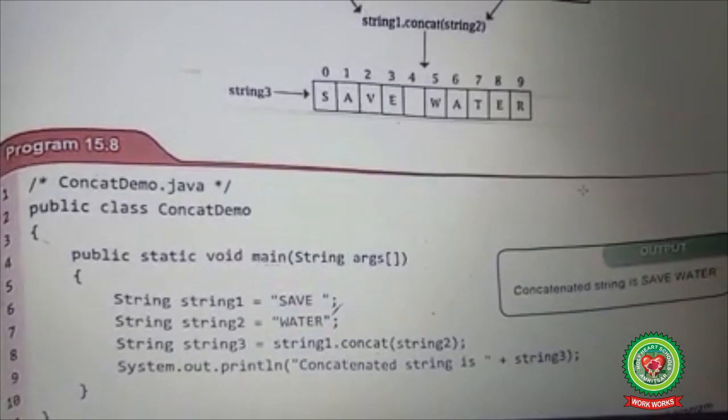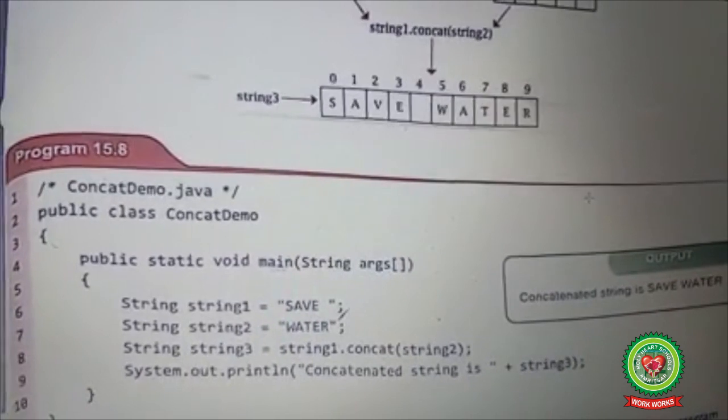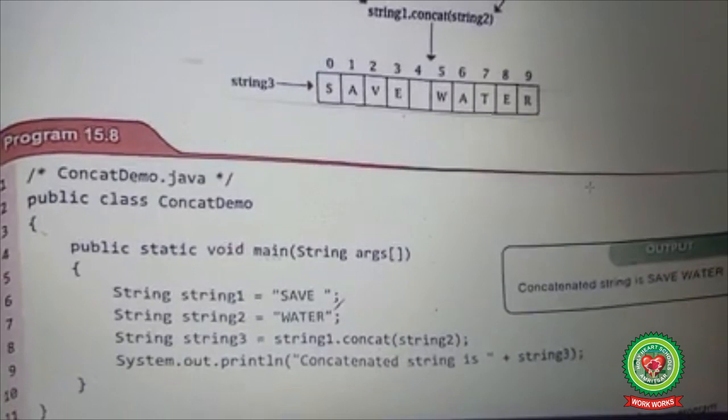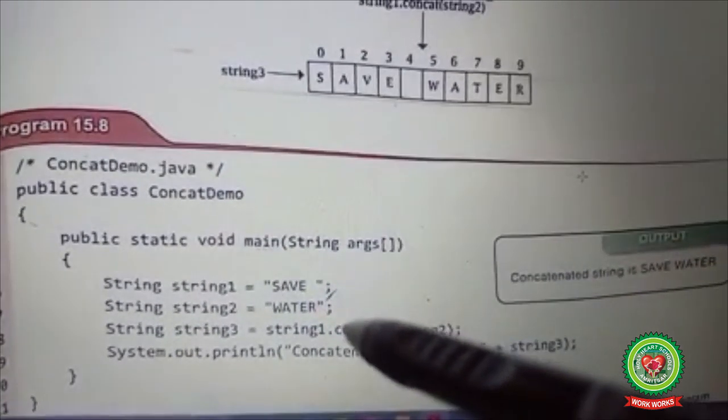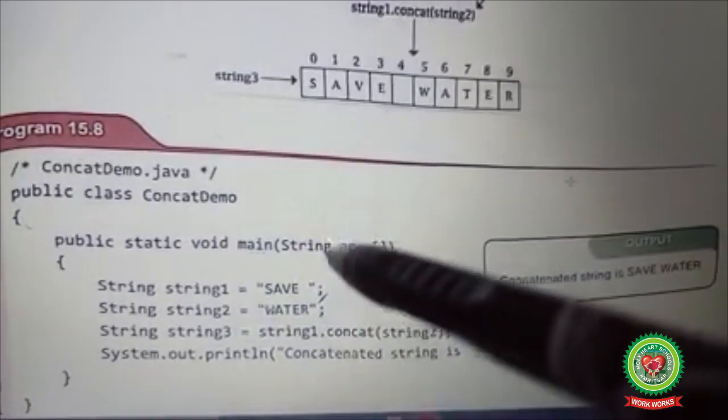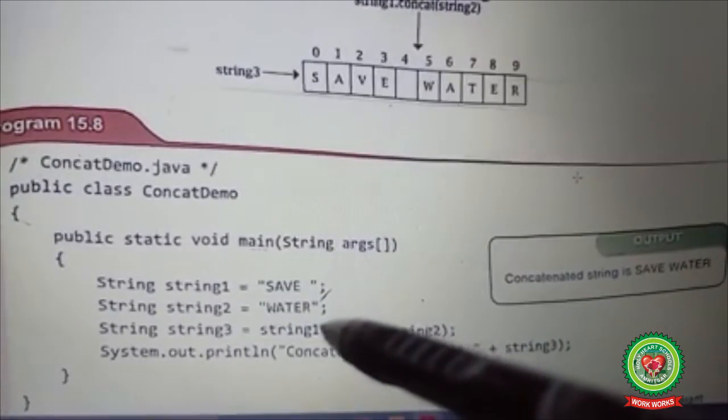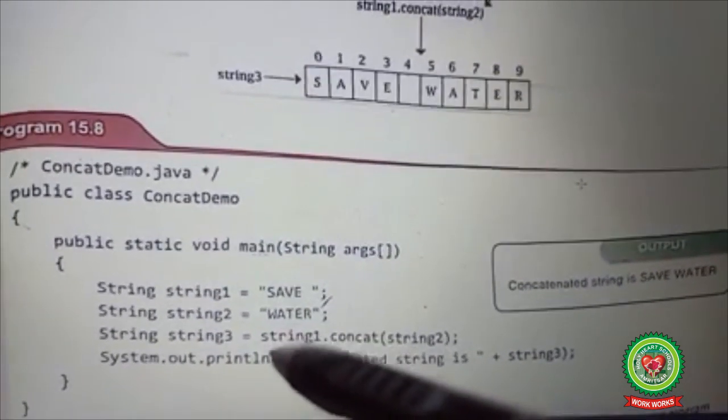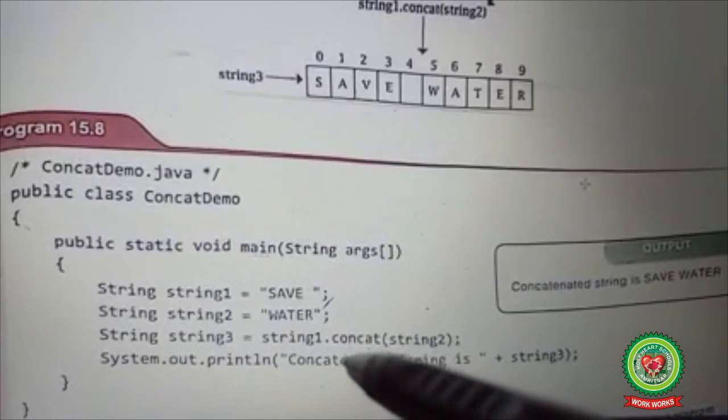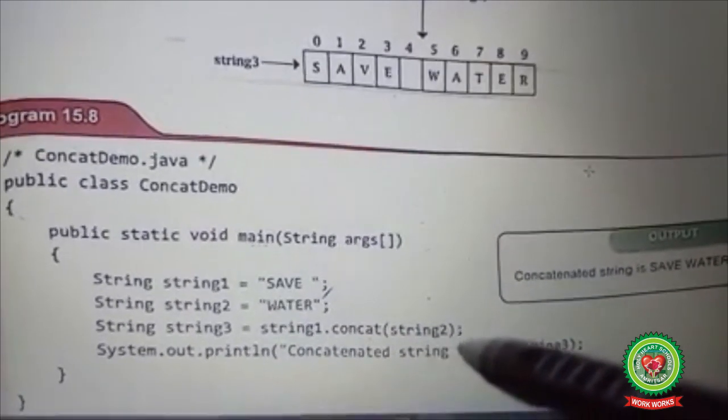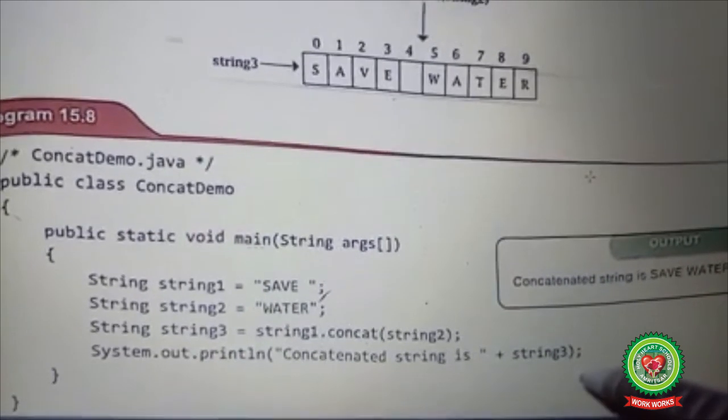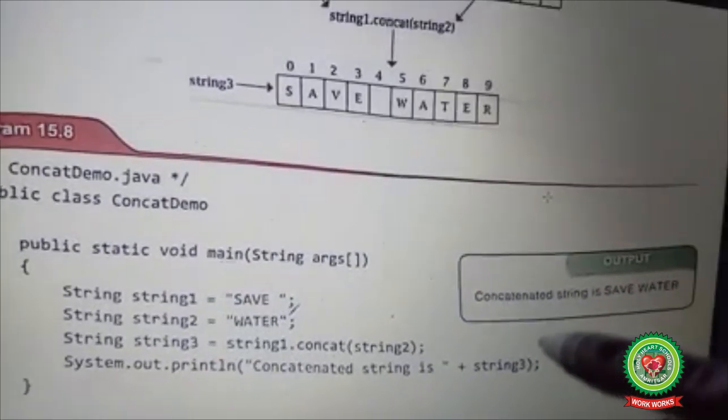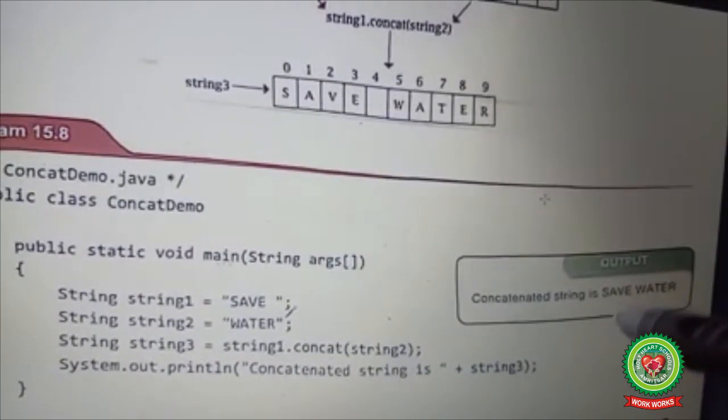Let us consider an example, program 15.8 on the same page. In this program, I have taken two strings 'save' and 'water'. Save is stored in string1, water is stored in string2. In string3, I wrote string1.concat(string2), and I am going to display the output, that is string3. The answer is concatenated string is 'save water'.